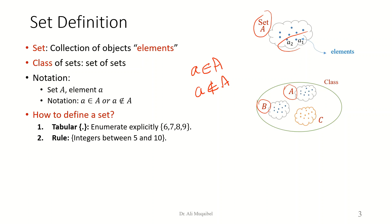How do we define a set? We have two ways. Either we use tabular, where we list all the elements, like here we say 6, 7, 8, and 9, between brackets. Or we can use a rule, let's say, by saying integers between 5 and 10.